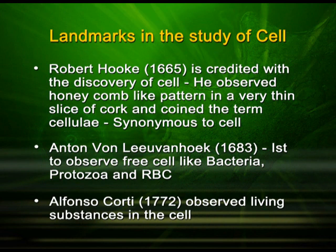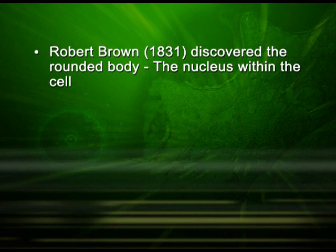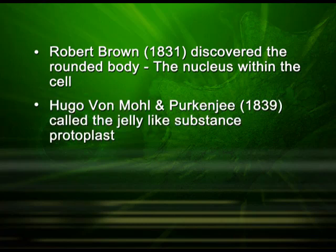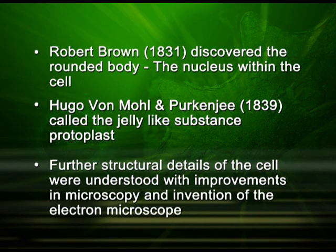Alfonso Corti in 1772 observed living substances in the cell. Robert Brown in 1831 discovered the rounded body — the nucleus — within the cell. Hugo von Mohl and Purkinje in 1839 called the jelly-like substance protoplast. Further structural details of the cell were understood with improvements in microscopy and the invention of the electron microscope.